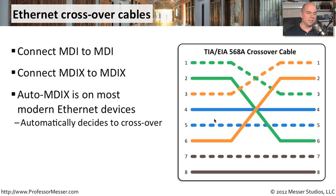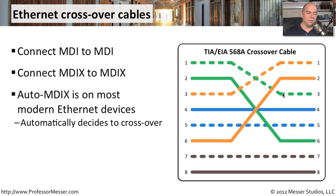A crossover cable looks like this. The colors shown are for the TIA/EIA 568A standard. Pin 1, instead of going to pin 1 as in a straight-through cable, crosses over to pin 3. Pin 2 crosses over to pin 6. Pin 3 goes to pin 1, and pin 6 goes to pin 2. That's really the only difference. The normally unused pins — 4, 5, 7, and 8 — still go straight through, but ethernet doesn't use those anyway.